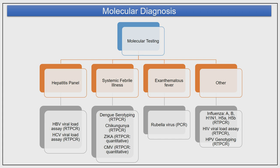For molecular testing: the hepatitis panel started this year — HBV and HCV viral load can be detected. In the systemic febrile panel, we can detect all four dengue serotypes by PCR, and chikungunya by real-time PCR. We have a Zika surveillance center for Rajasthan, established this year by DHR. Cytomegalovirus quantitative PCR is available for neonates and immunocompromised individuals. For exanthematous fever, we have rubella virus PCR. We are an influenza network laboratory for both swine flu and bird flu, covering H5N8 strains as well as endemic strains like Yamagata and Victoria.